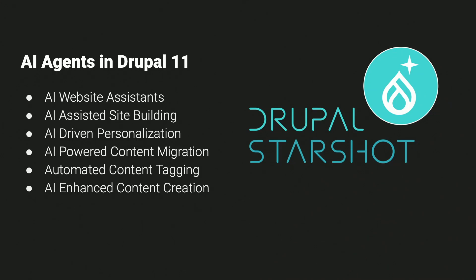For content authors, we'll have things like automated tagging based on content, alt tags generated from images being added, and enhanced AI content creation — things like 'let me help you summarize this' or 'let me rewrite this for you.' These are AI developments that will eventually be baked into the Drupal project. It's exciting, but as I said, it's still a little way off.